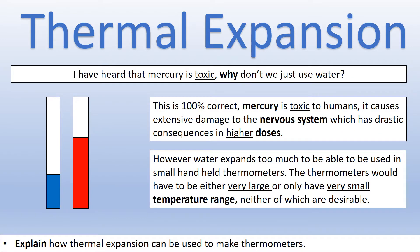A common question is: couldn't we just use water instead of mercury, since mercury is toxic? It's true that mercury is toxic — particularly damaging to the nervous system and can cause brain damage. The problem with water is that it expands too much. In a handheld thermometer, we'd only be able to use it over a very small range before the water would come out the end. Mercury is chosen because it gives a reasonably small volume change with temperature, allowing measurement across a full range in a compact device.